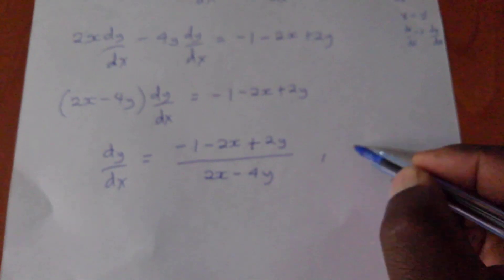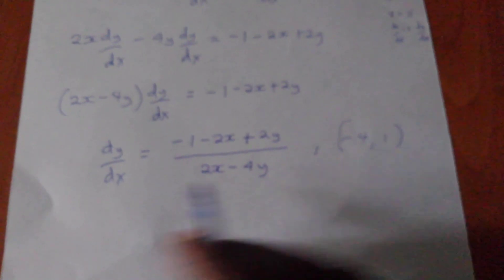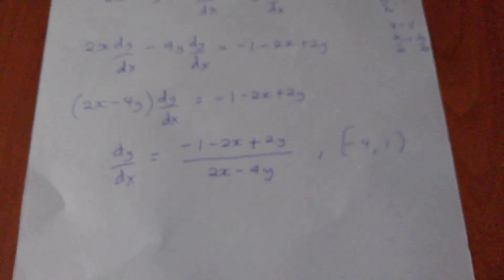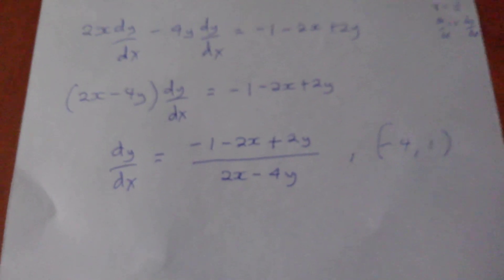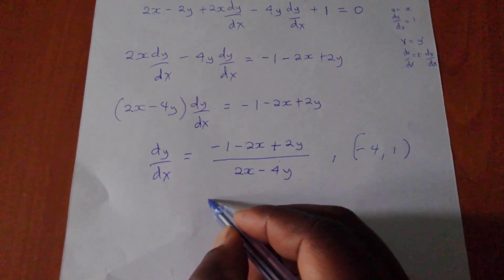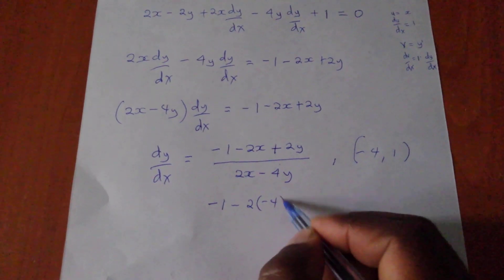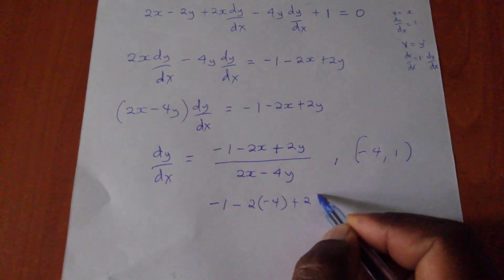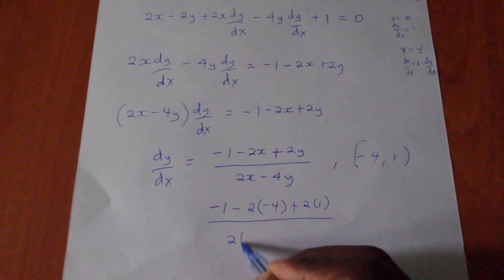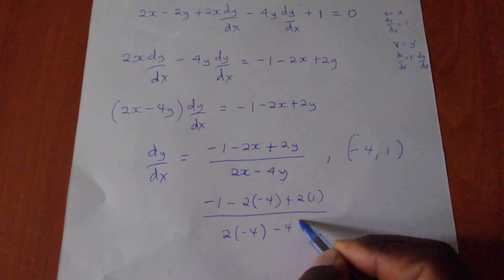So in here, remember they gave us a point negative 4 and 1. So this is our gradient already. So I'm going to try to put into this and see what we can be having. So trying to put in what I have minus 2 negative 4 plus 2 times 1 all over 2 into negative 4 minus 4 into 1.